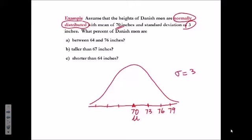Below the mean, one standard deviation would be 70 minus 3, or 67 inches. So there are your raw scores.